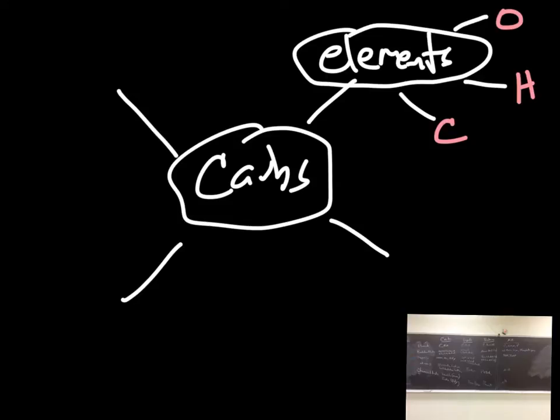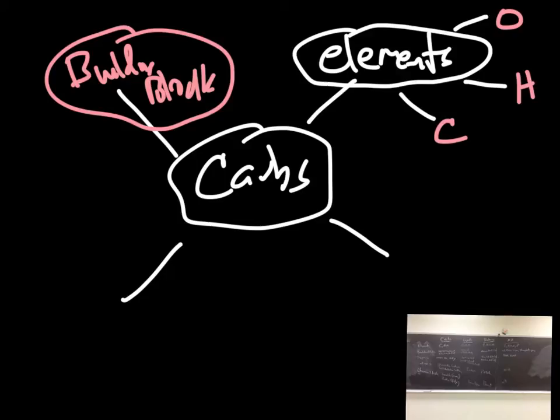So maybe over here I write the word building blocks. And building blocks, and again I apologize for the hieroglyphics there, but the idea is what makes up carbs? So what are the building blocks to make up carbs? And as you can tell from our chart down here, it says monosaccharides. And so I would kind of link off that and say monosaccharides.